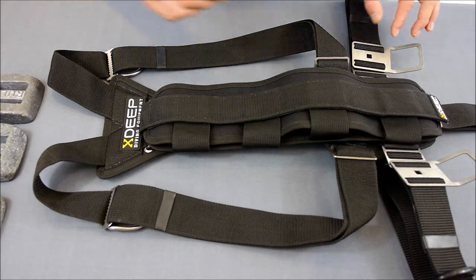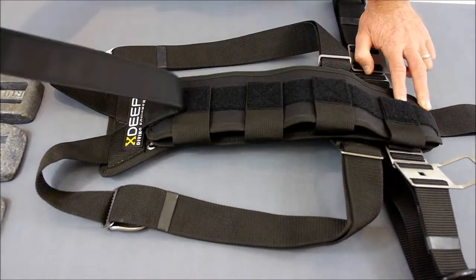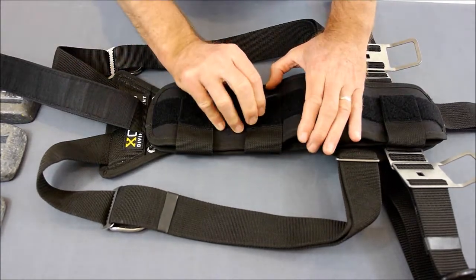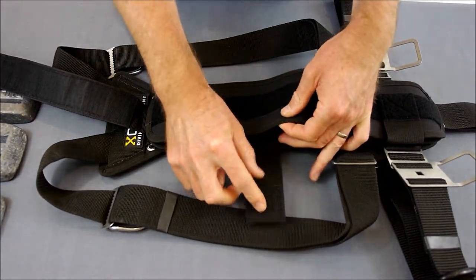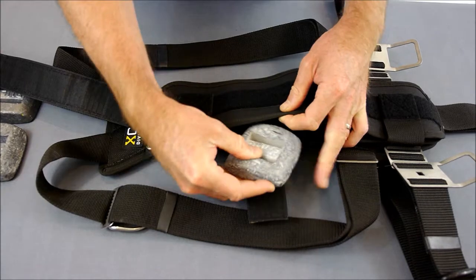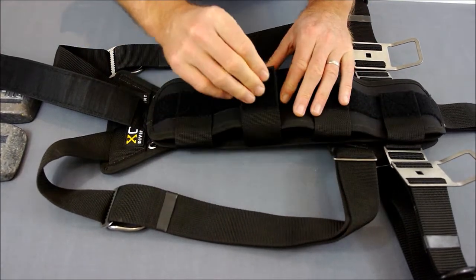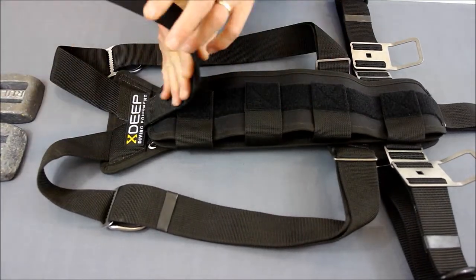To add weights to the central weight pocket, lift up the back tab, open a tab to one of the four compartments, insert a weight, and close it back up again.